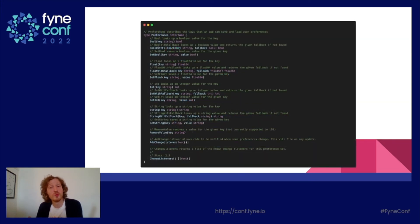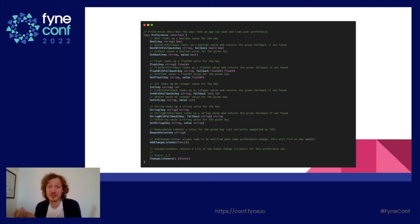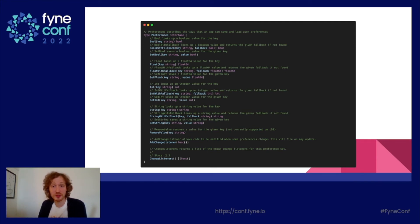So what are we conforming to? The preferences interface here has many methods with bool, float, int, and string setters and getters. I'm going to show you how we implemented those in our solution.